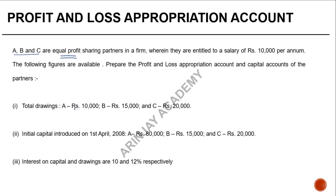The total drawings of A are $10,000, B $15,000, and C $20,000. Initial capital introduced on 1st April 2008: A $80,000, B $15,000, and C $20,000. Interest on capital and drawings are at 10% and 12% respectively.